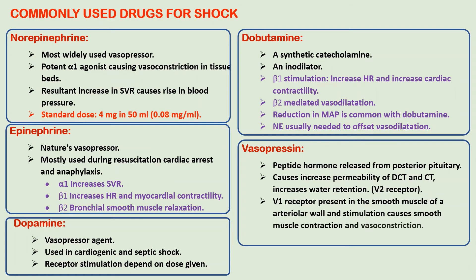The last drug is vasopressin, a peptide hormone released from the posterior pituitary. It acts on V1 and V2 receptors. By acting on V1 receptors it stimulates smooth muscle contraction and vasoconstriction of arterial walls, and by acting on V2 receptors it increases water retention.